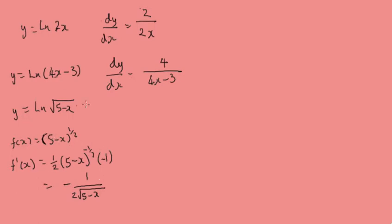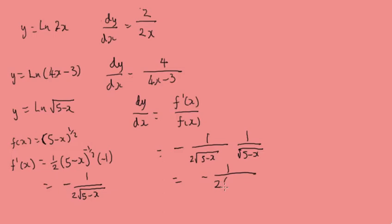So let's go back to this. So then dy by dx would be, remember the derivative of f of x over f of x. So that is going to be minus 1 over 2 root of 5 minus x, multiplied by 1 over root of 5 minus x, which will give us minus 2, and the square roots will cancel out, over 5 minus x.